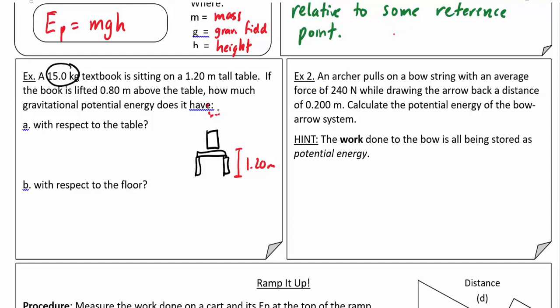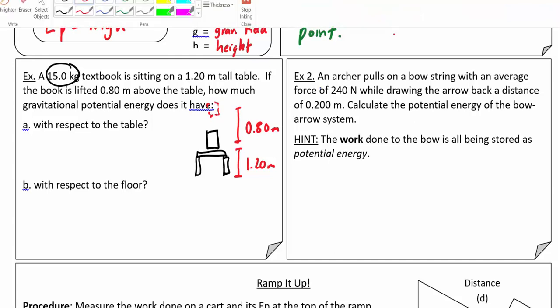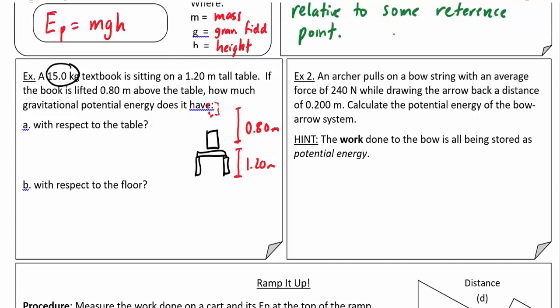How much potential energy does it have? We know that potential energy is equal to mgh. If we're talking about with respect to the table, it's only 0.8 meters above the table, so it would be 15 times 9.8 times 0.8, which gives us right around 120 joules.